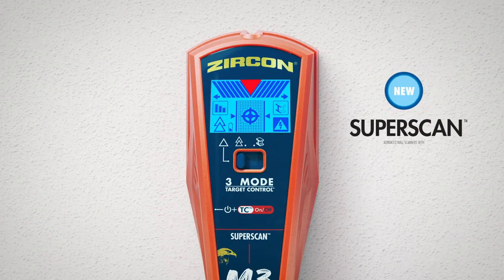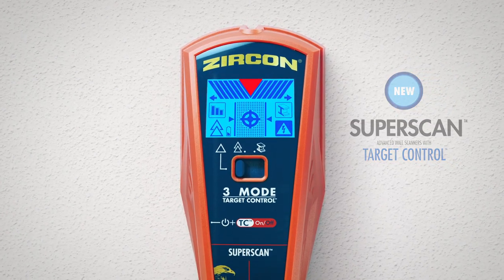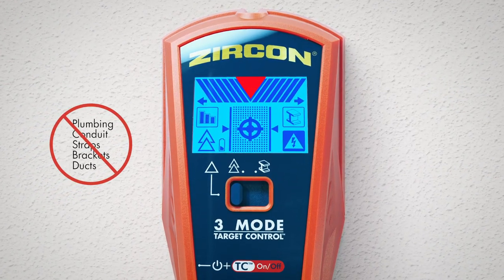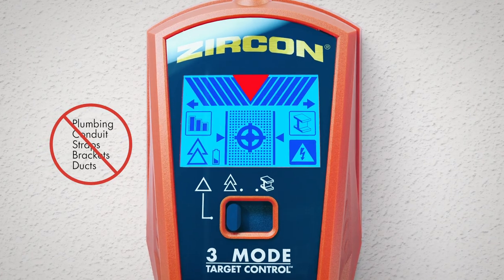Here's how. With Zircon Advanced Wall Scanners with TC technology, users can avoid all things metallic, such as plumbing, conduit, straps, brackets, or ducts hiding in the wall.